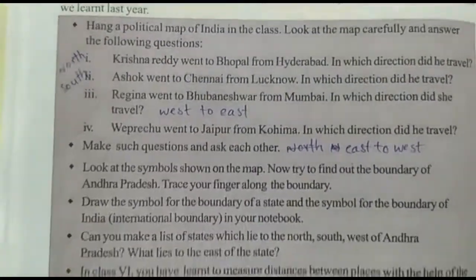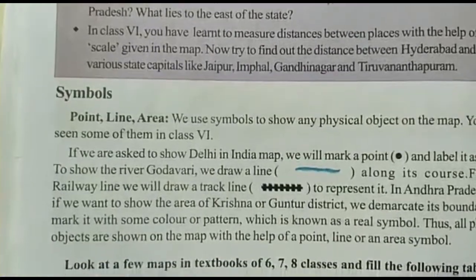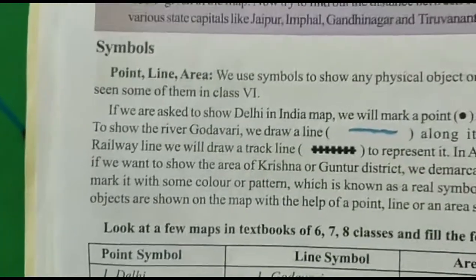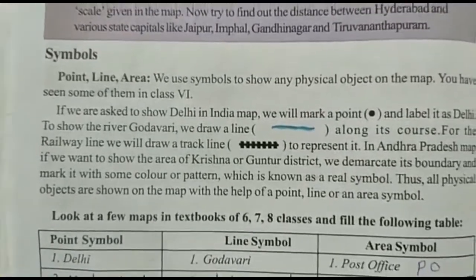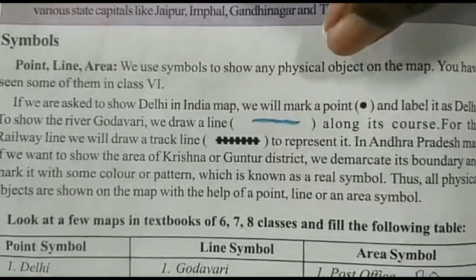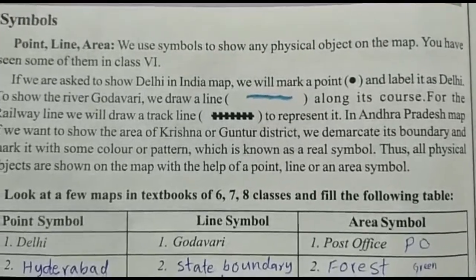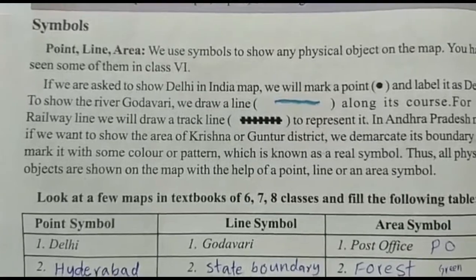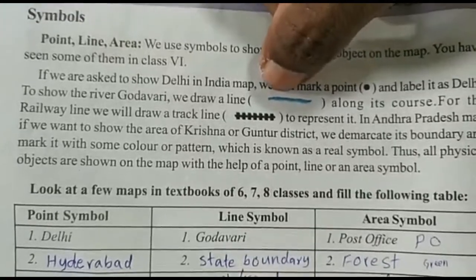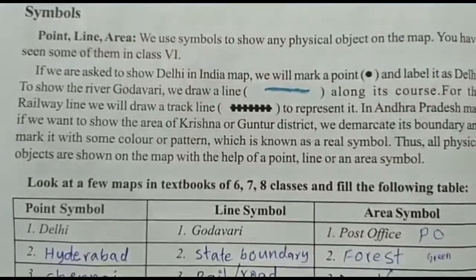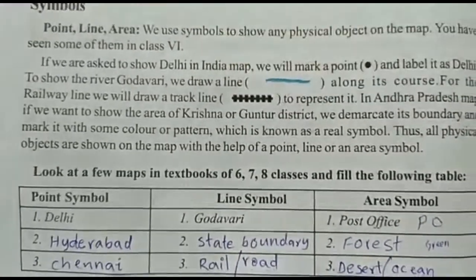Now, symbols. While you are preparing maps, we use some common symbols. There are three types of symbols. First one is point symbols — a point symbol shows exactly one specific place. Second one is line symbol — for example, when we are showing one river, that is called a line symbol. Third one is area symbol — for example, a railway track line is shown as an area symbol.